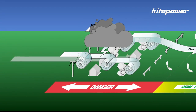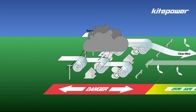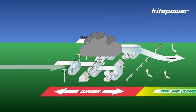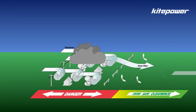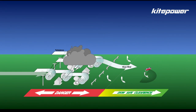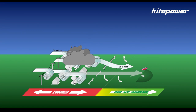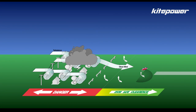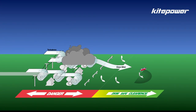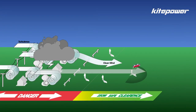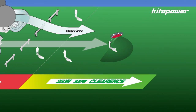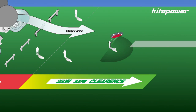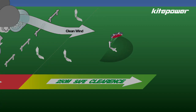When you go to fly your kite you need to find a large open space where the wind is not going to be obstructed by buildings or trees, and you have a large open area downwind of you to give you enough room to allow you to do your manoeuvres safely.